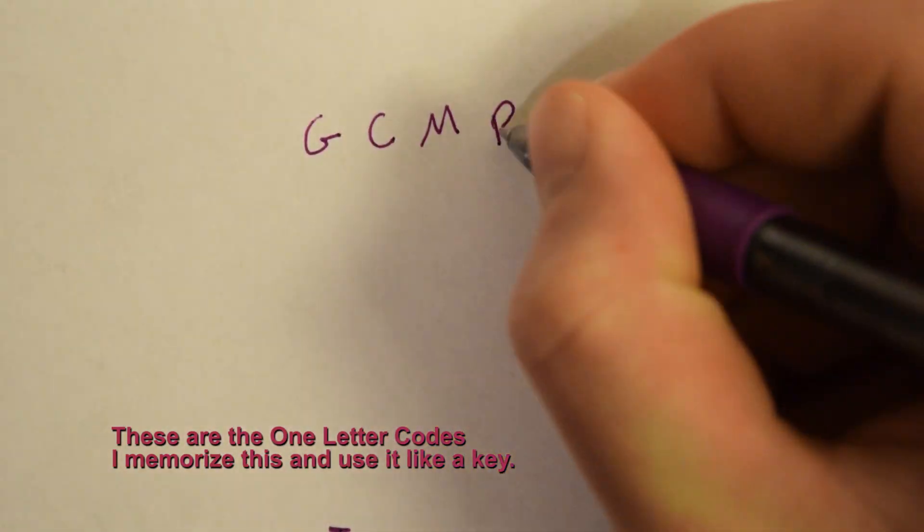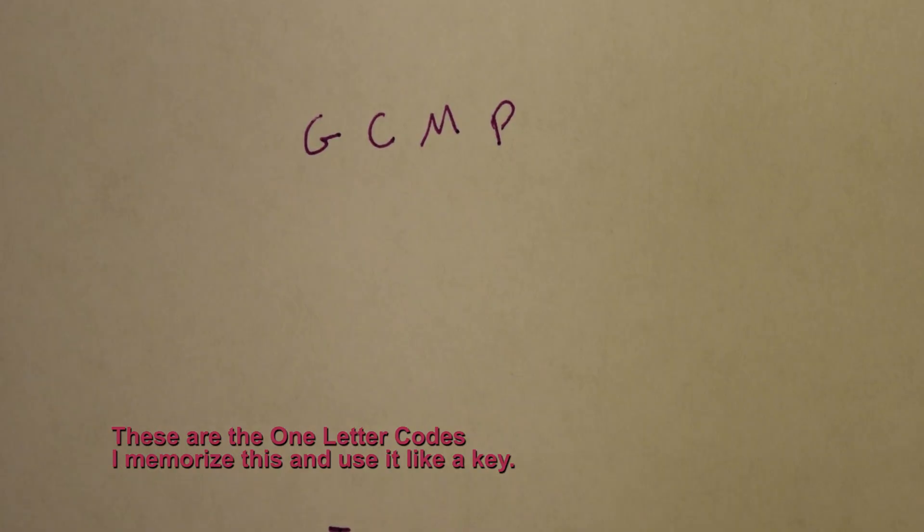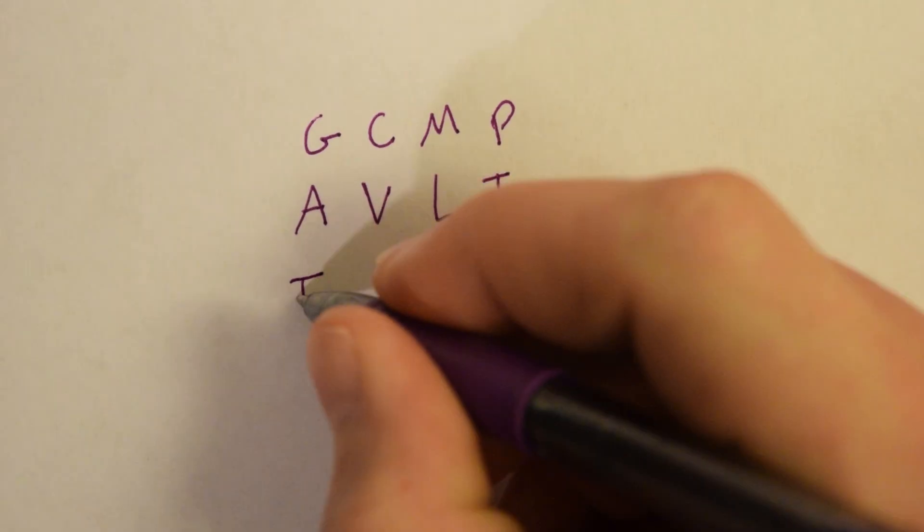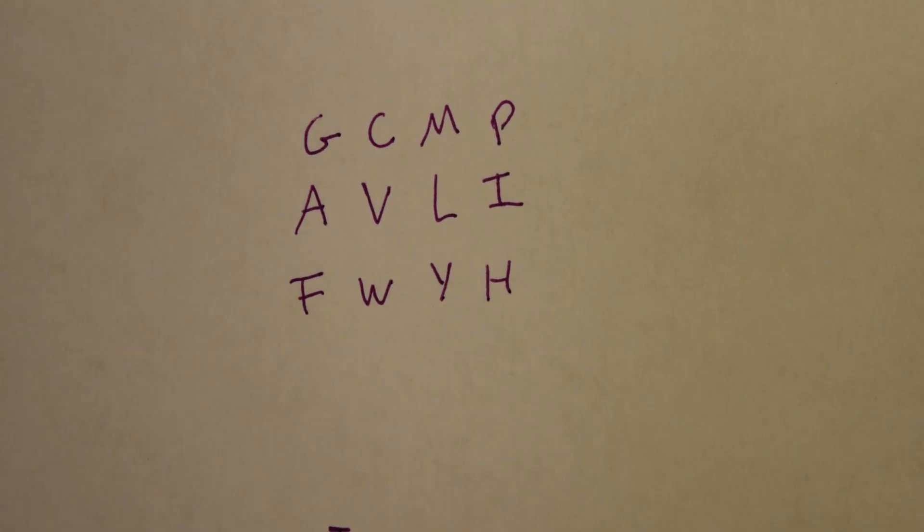First line is GCMP, I like to think of GCAMP. Next is AVLI. Next is FWYH, or FWUH, you can probably think of a better one for that one.